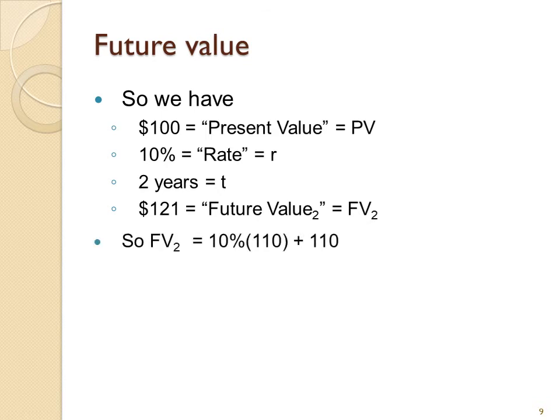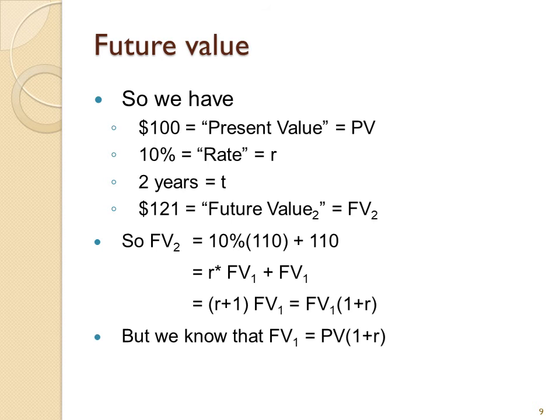Bringing that around, we have FV2 equals 10% times 110 plus 110, 110 being the value after one year, future value one. So that is the rate times FV1 plus FV1. Again, factoring that out, you end up with FV1 times 1 plus rate. It looks very much like the equation for the amount after one year compared to year zero. This is the same thing after two years compared to year one. But now we already know that future value at one year is equal to present value times 1 plus r. So that means the FV2 equals FV1 times 1 plus r. Replacing FV1, you have PV times 1 plus r, and that all times 1 plus r. Simplifying it out, you get PV times (1 plus r) squared.